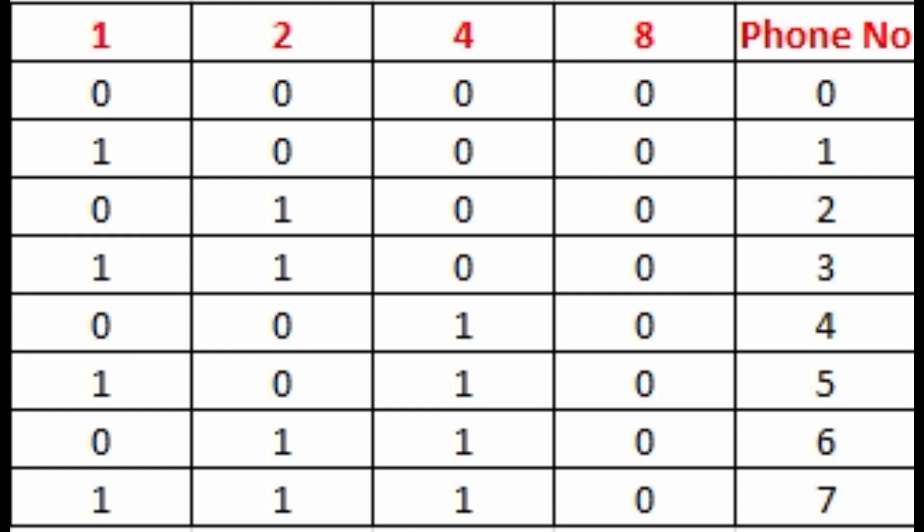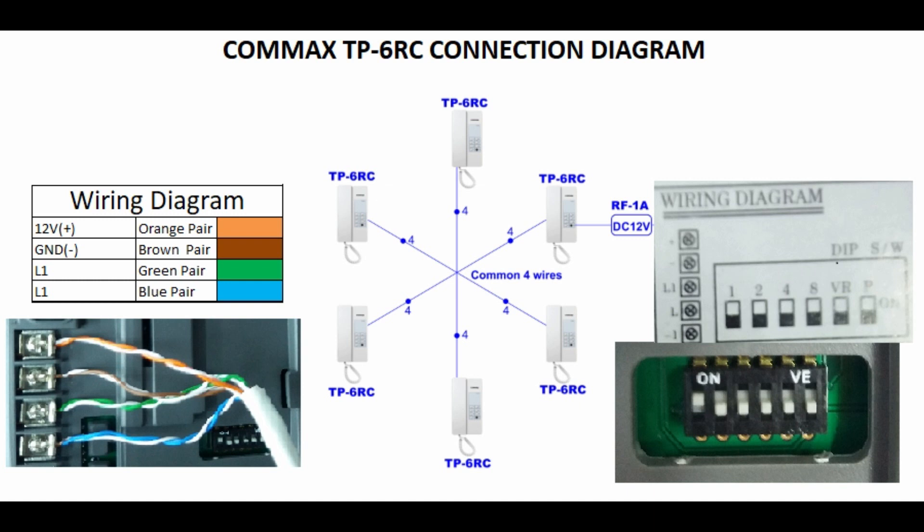One and two both are on and four eight both are off means the number is noted as three, one plus two. I hope you got an idea about the numbering system.